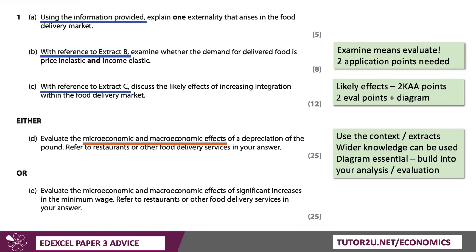And then you get to the 25-markers. Evaluate the micro and macroeconomic effects — this time of a fall in the pound. Refer to restaurants or other food delivery services in your answer. So you must use the extracts and the context to help get those application marks.